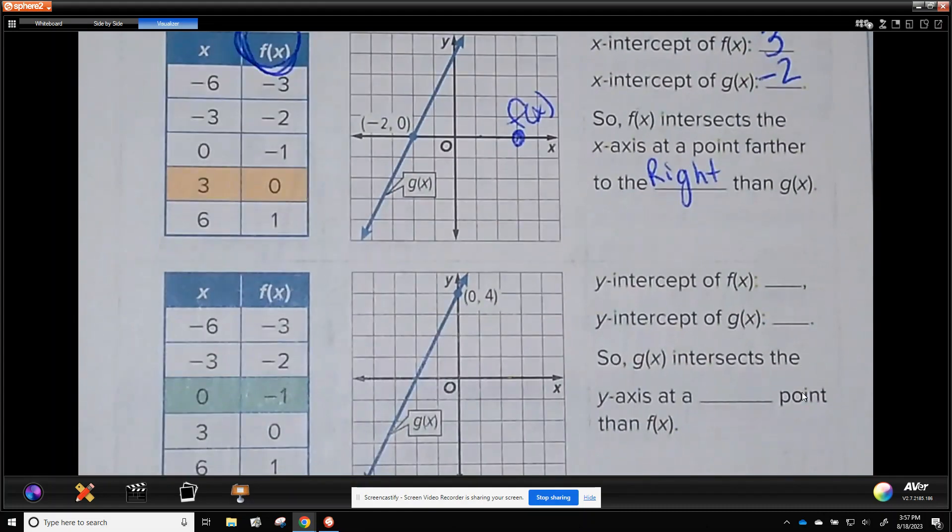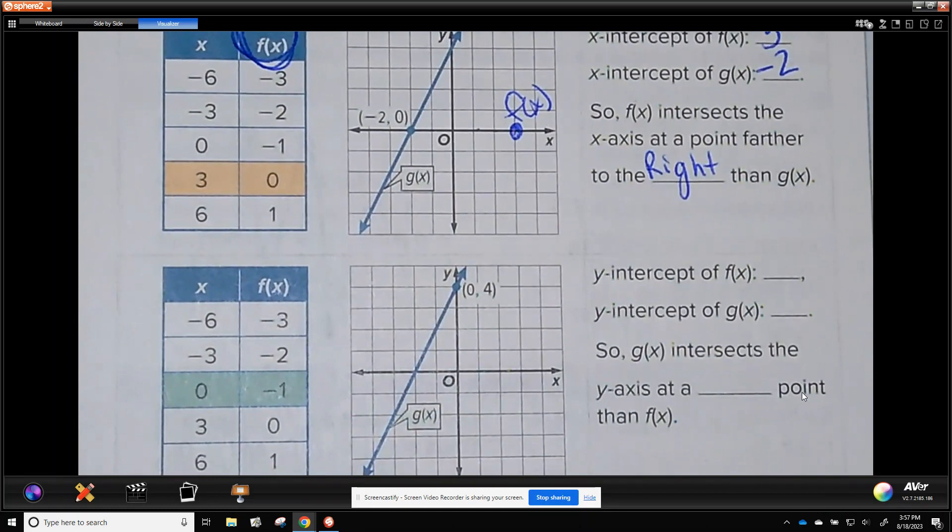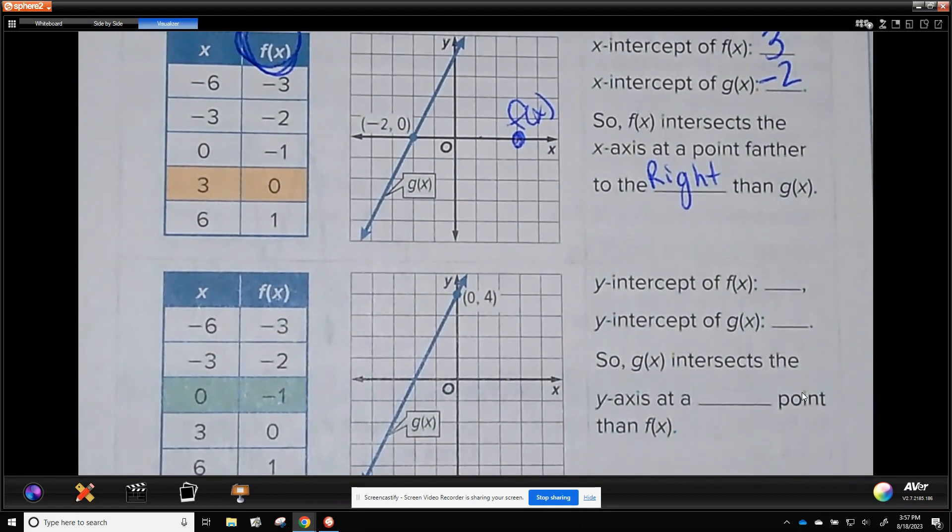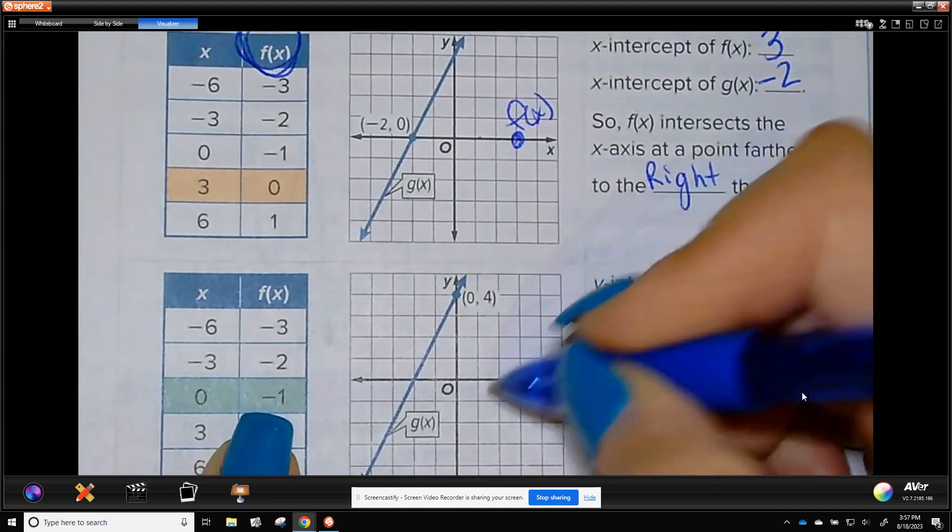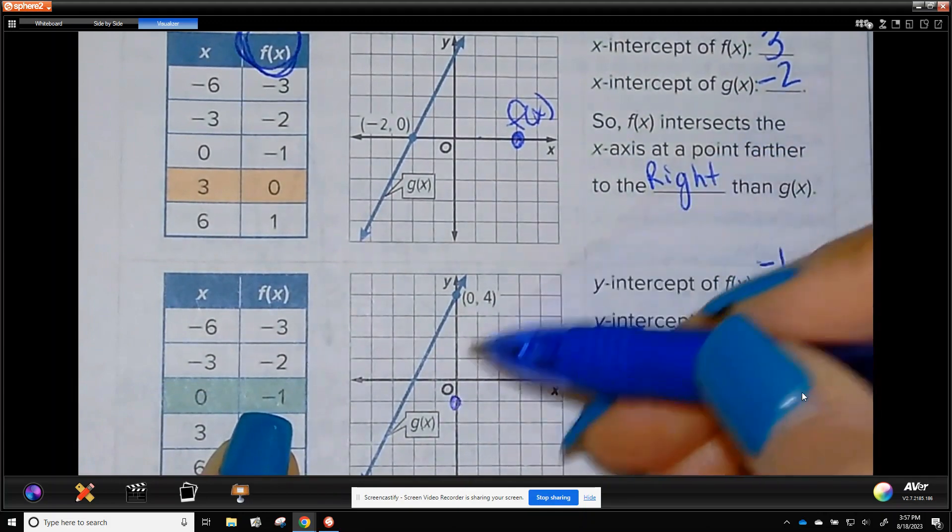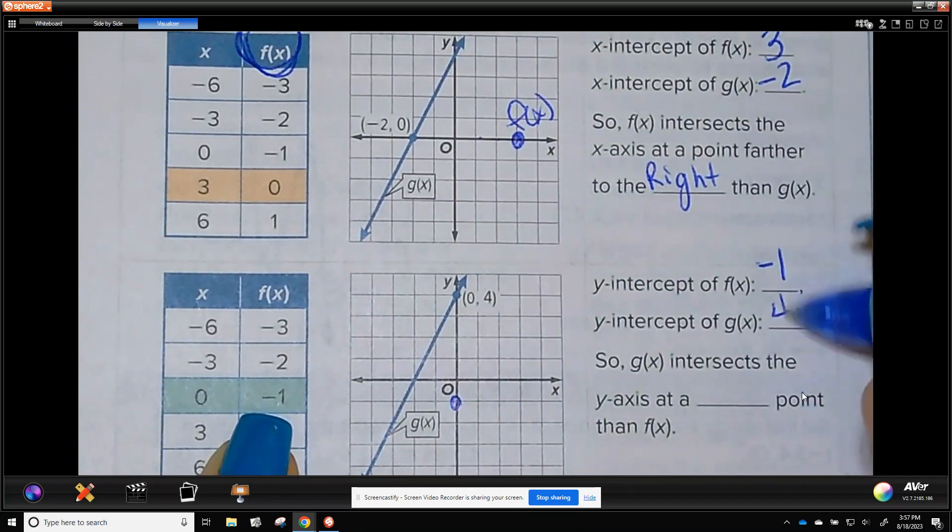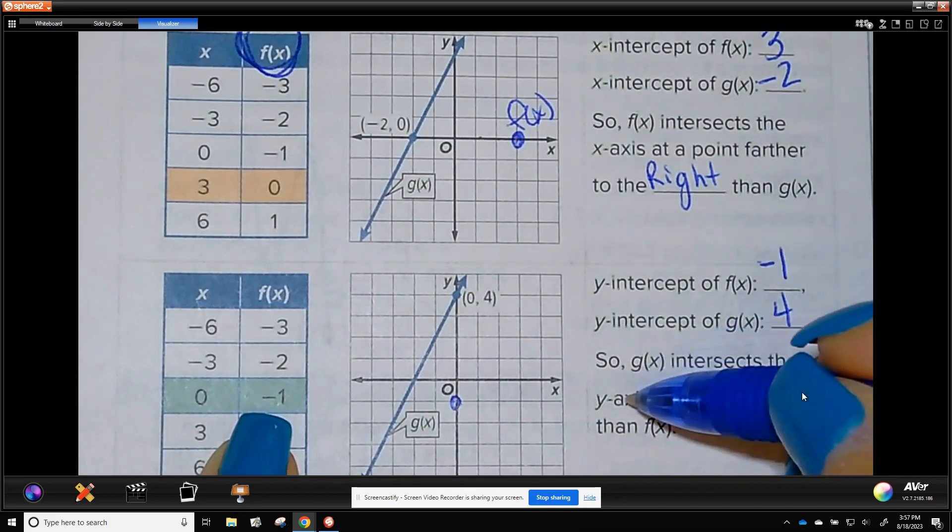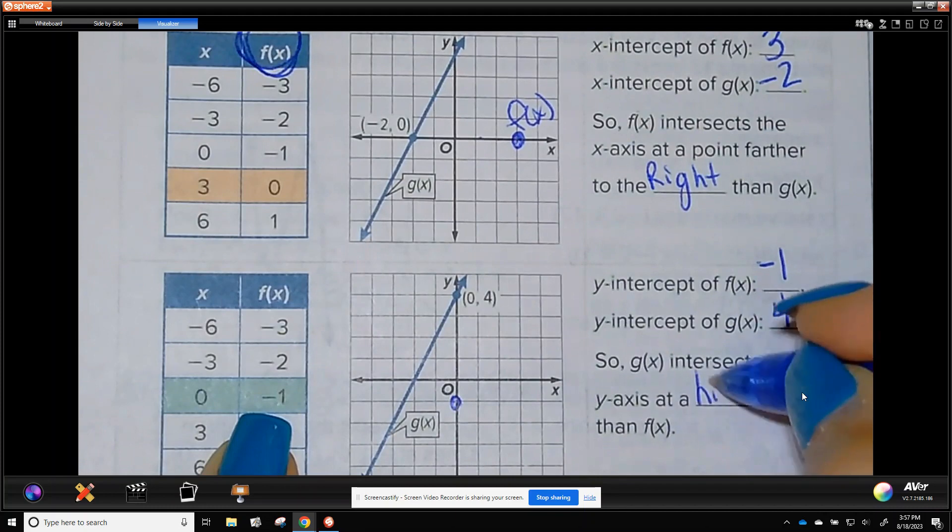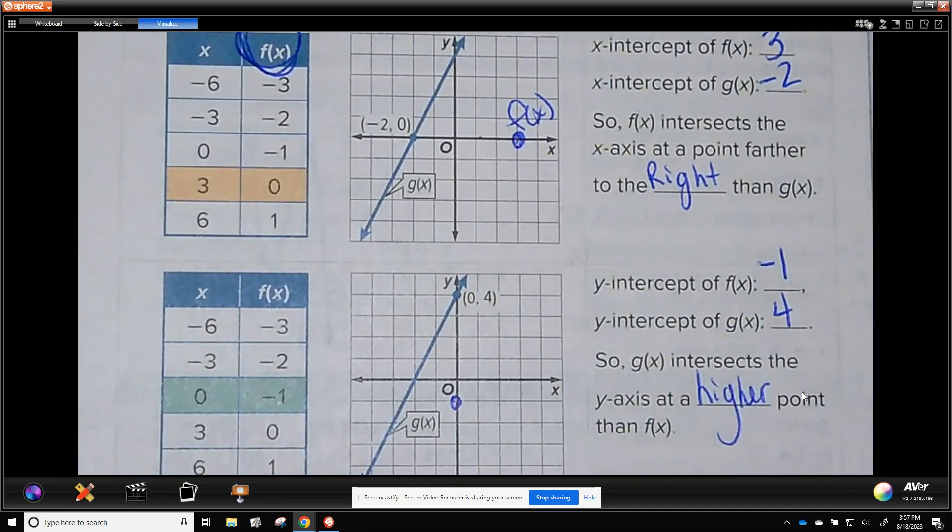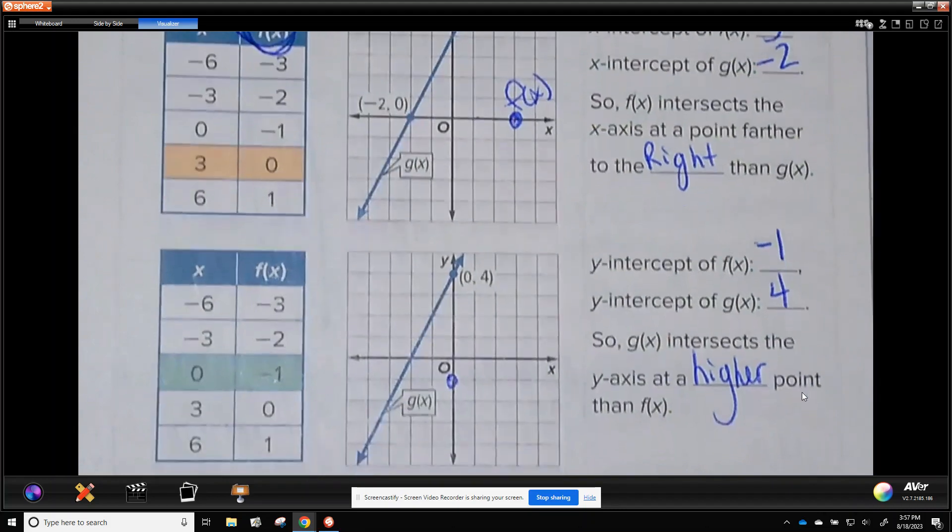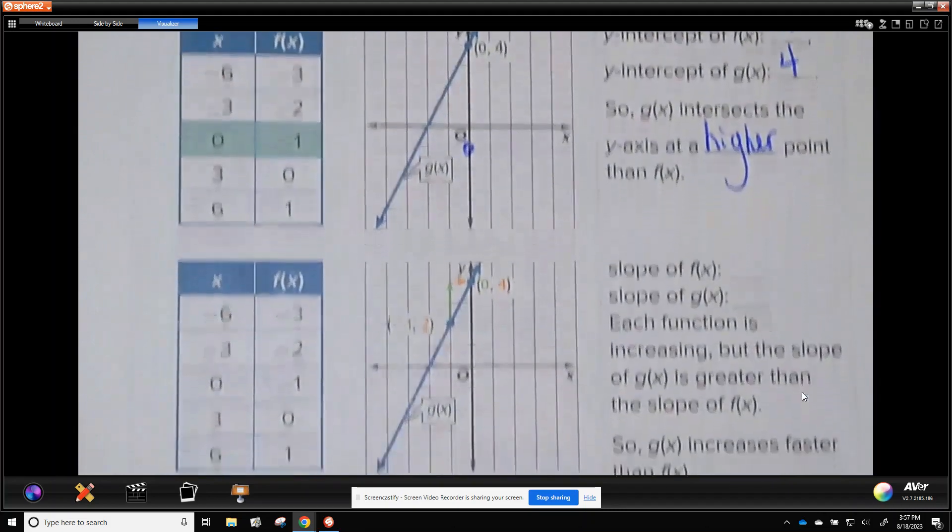Now we're going to do the y-intercept. I think I have enough room to show that there. So the y-intercept again is highlighted, so negative 1. So that would be like right here. The y-intercept of g is 4. So g intersects the y-axis at a higher point than f of x or greater. Higher or greater would be fine.